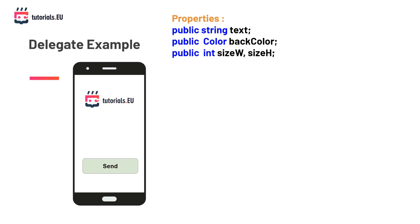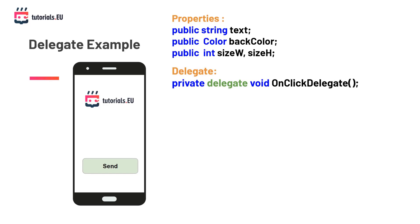We have a problem here: we as the developers who made this UI system cannot tell what other developers want the button to do when it's clicked. That's why we need to provide the onclick event as a delegate and not as a normal method. Since a delegate is a variable that can store a reference to a method, other developers can write their own implementation inside a method and assign it to the button's onclick delegate we provided. Our onclick delegate can be defined like this — let's break it down bit by bit.